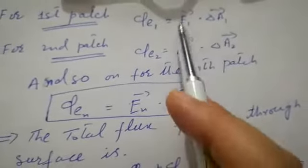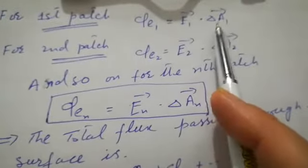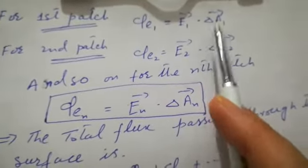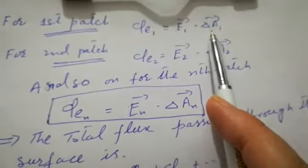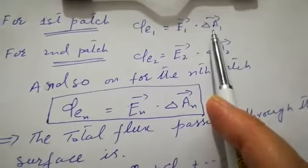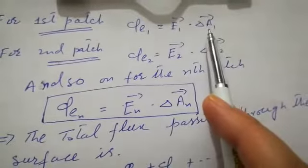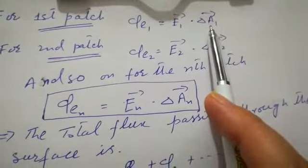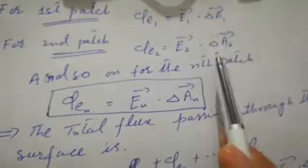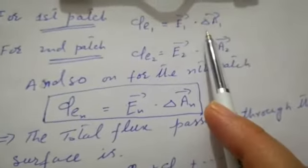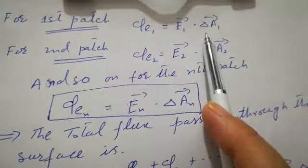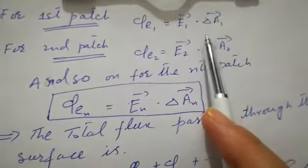These are both vector quantities, so you should place a vector sign over them. Note that the surface area also carries a vector sign when we talk about vector area. If you don't put the vector sign, then your marks will be deducted — this is a very important point.